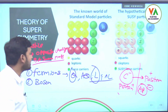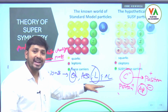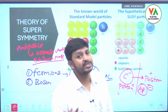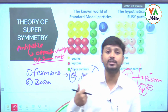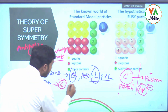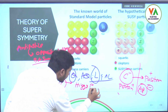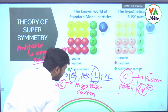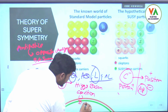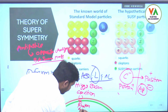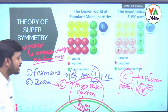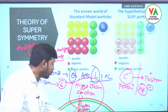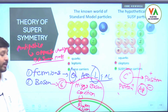So quarks, anti-quarks, leptons, and anti-leptons together are all known as fermions. Bosons are force-carrying particles. According to this theory of supersymmetry, there are six bosons: Higgs boson, graviton, W, Z, photon, and gluon.